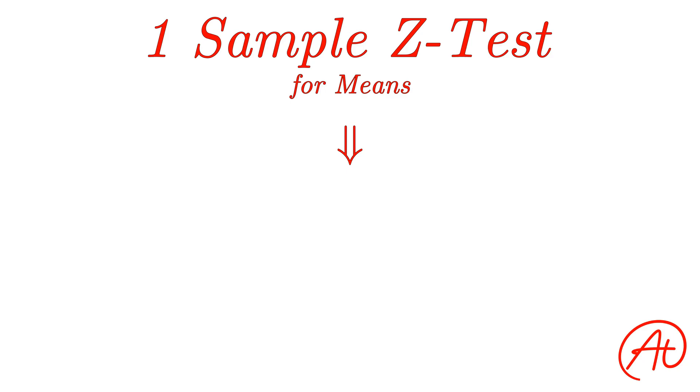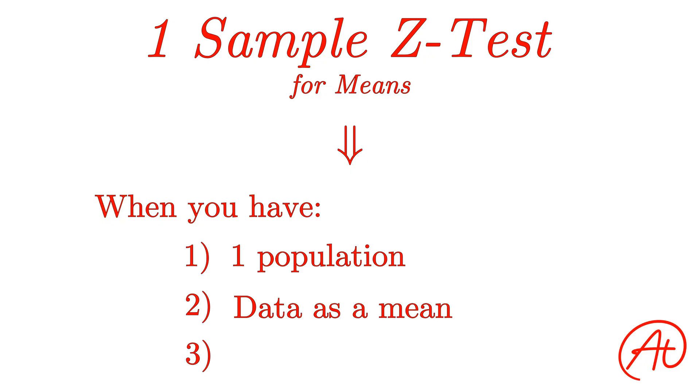One sample z-tests are just one way to do that when you have a certain population and certain data. So when would you use a one sample z-test for means? Well, you would use this type of hypothesis test whenever three things are true. First, you need to have one single population you are pulling data from. Second, your data has to be in the form of a mean, as opposed to a proportion or another measure. And third, the population standard deviation sigma has to be known.